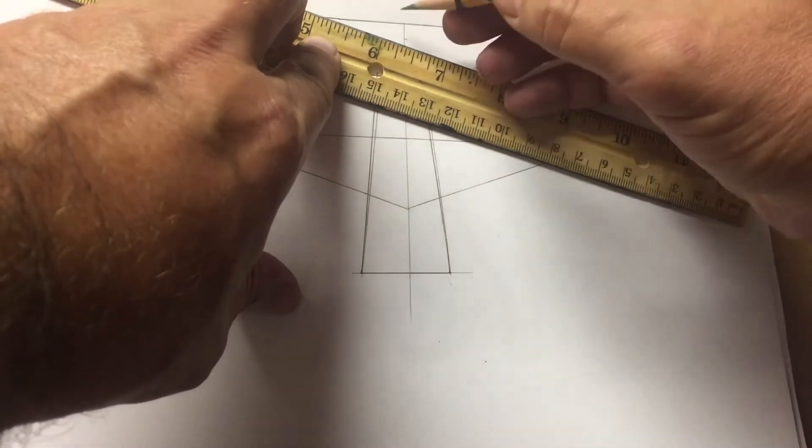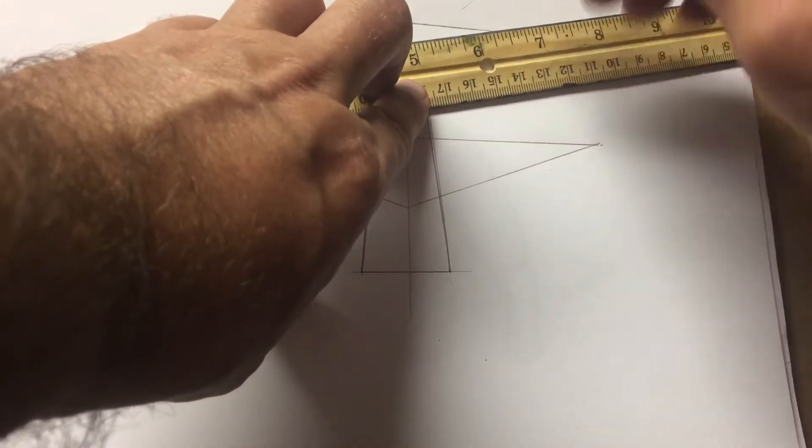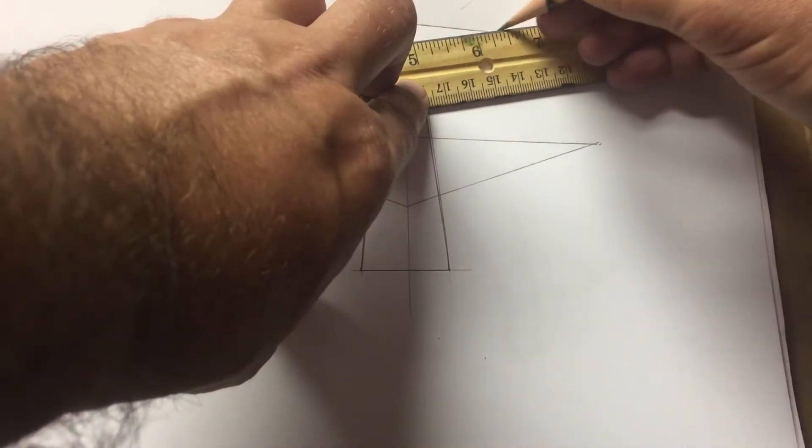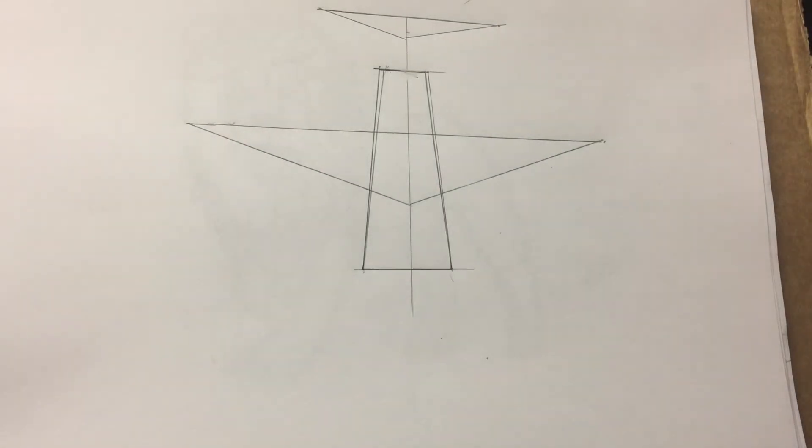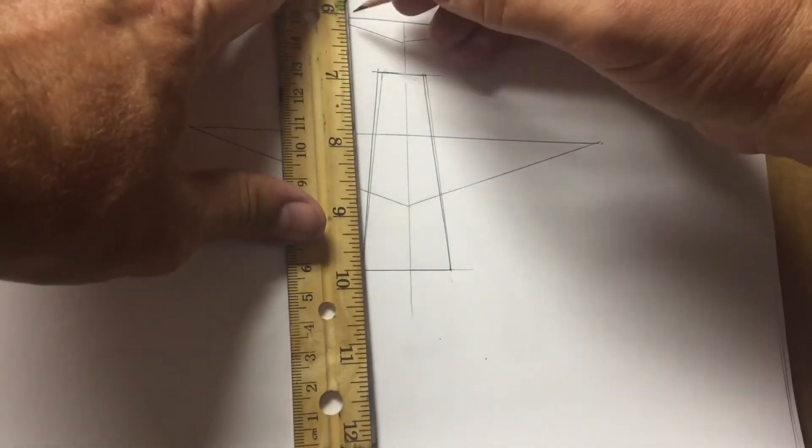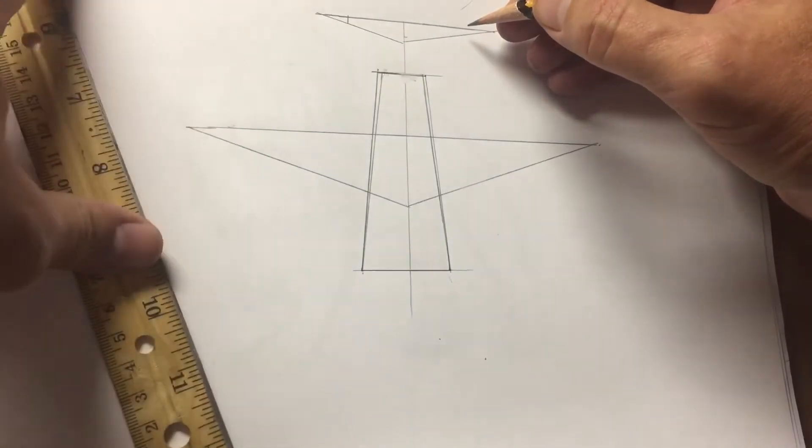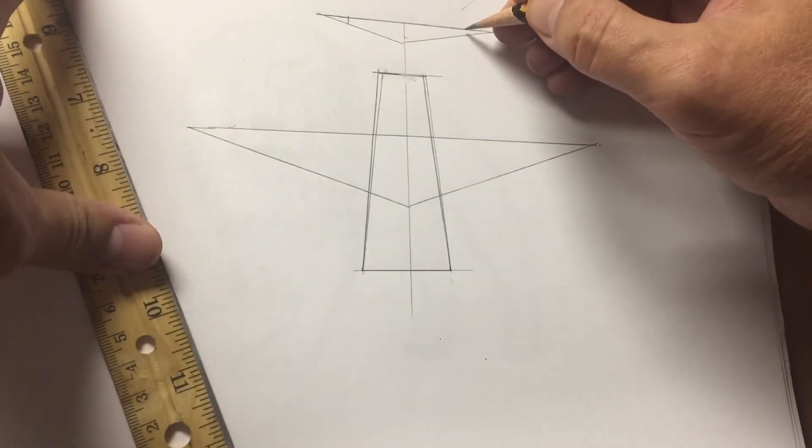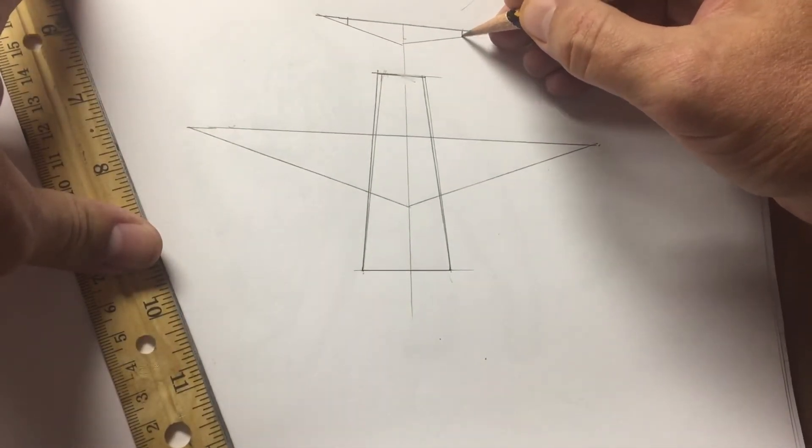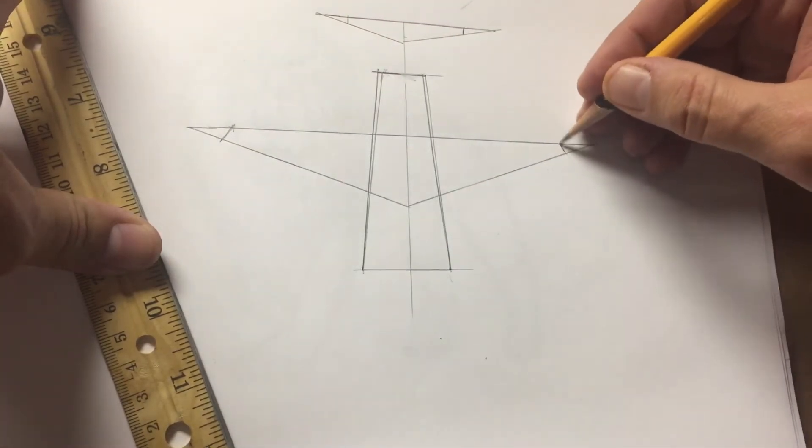And we'll make two triangles, one there and one there. Now next we're going to trim the edges off of those triangles. So right about here, and I'm going to freehand these I think. Right about there, right about there, right about here.